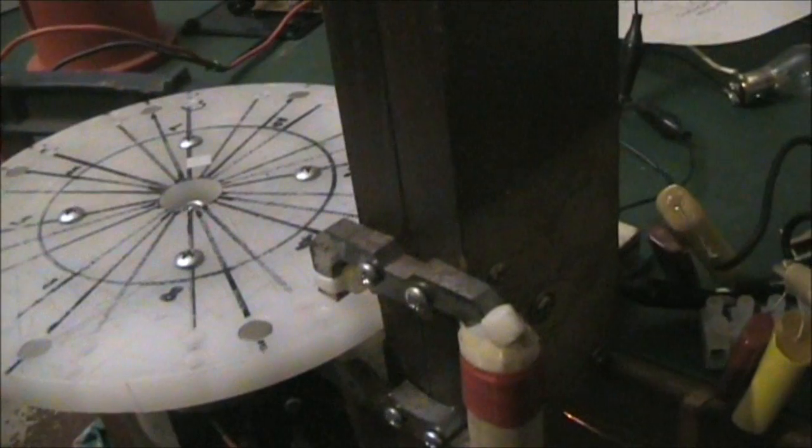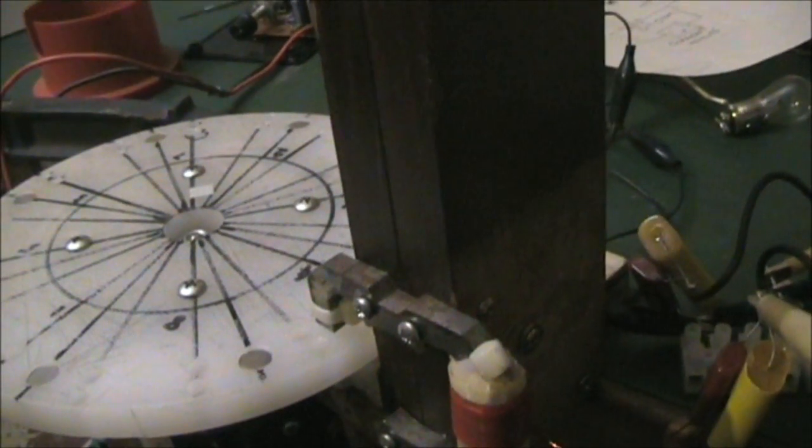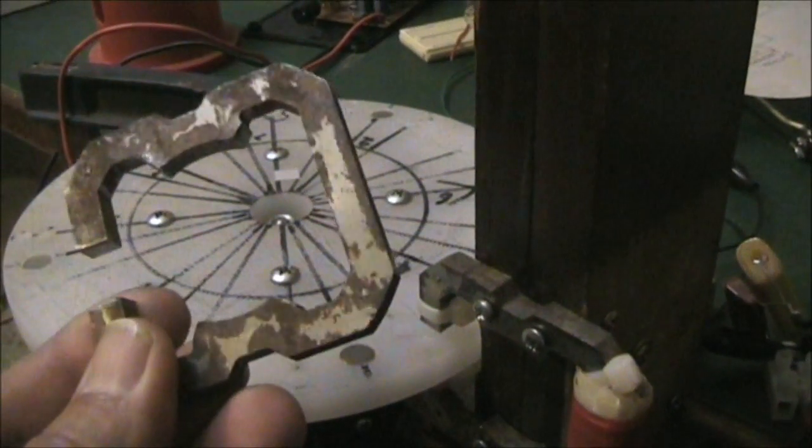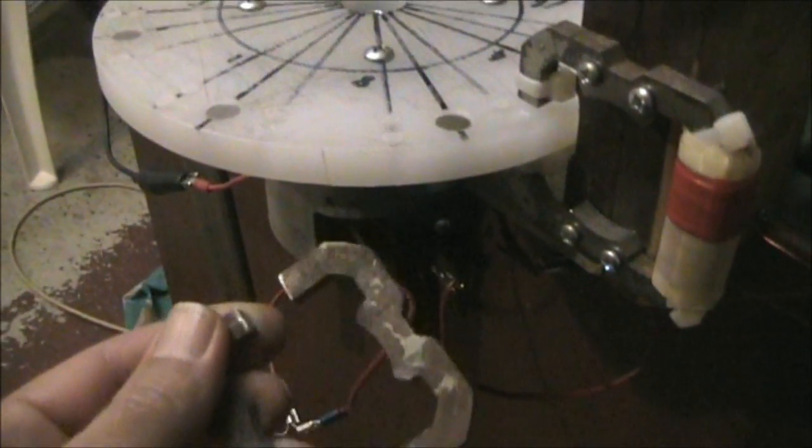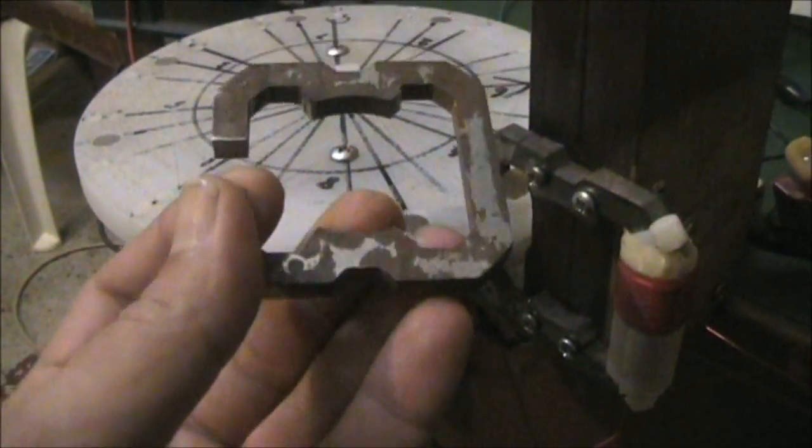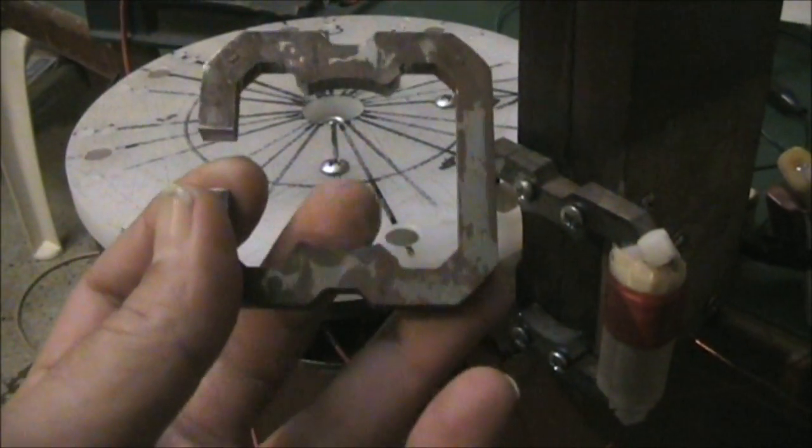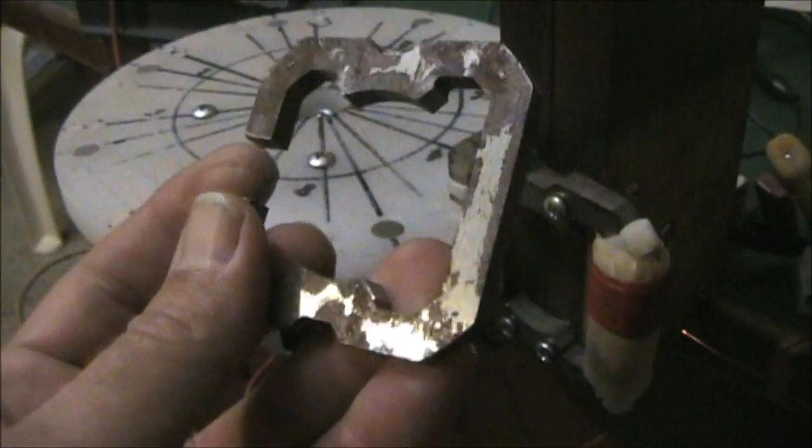The C-shaped core pieces I actually made from a universal motor field core. I just cut some of the pieces off here and there and cut a slot in there.